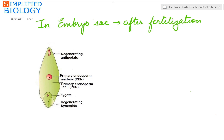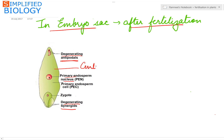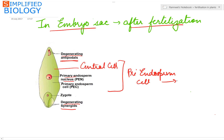After fertilization inside the embryo sac, the antipodal cells start degenerating — they were the vegetative cells of the female gametophyte. The synergids also degenerate. The primary endosperm nucleus, along with the central cell, is now referred to as the primary endosperm cell, which divides to form the endosperm during seed development. The zygote will divide to form the embryo.